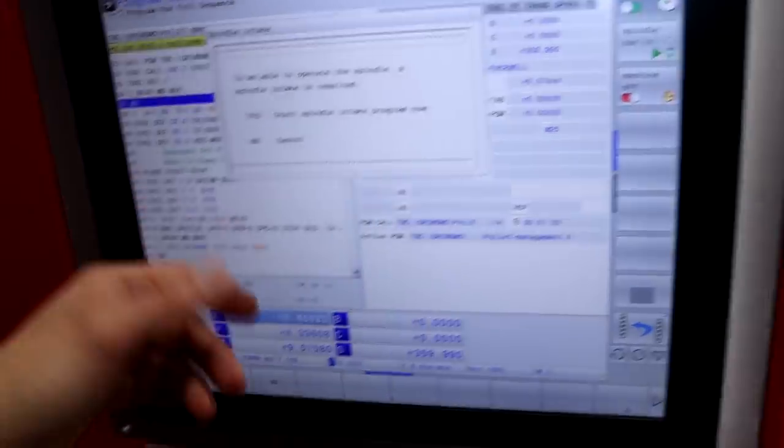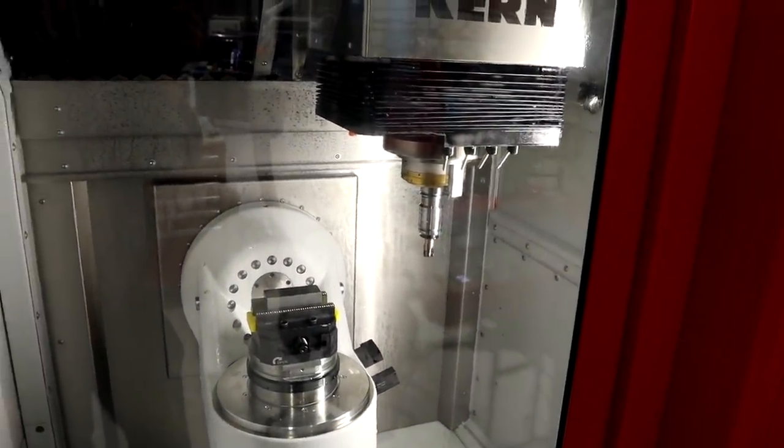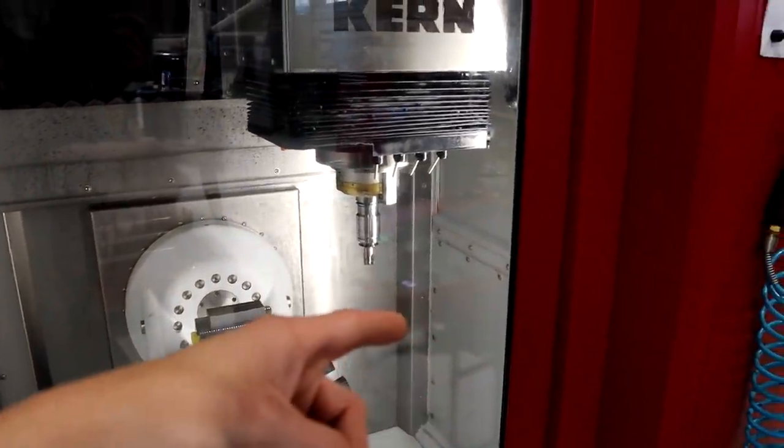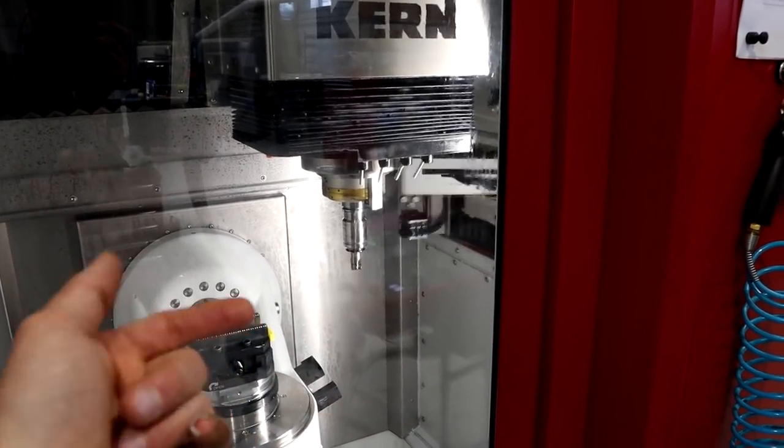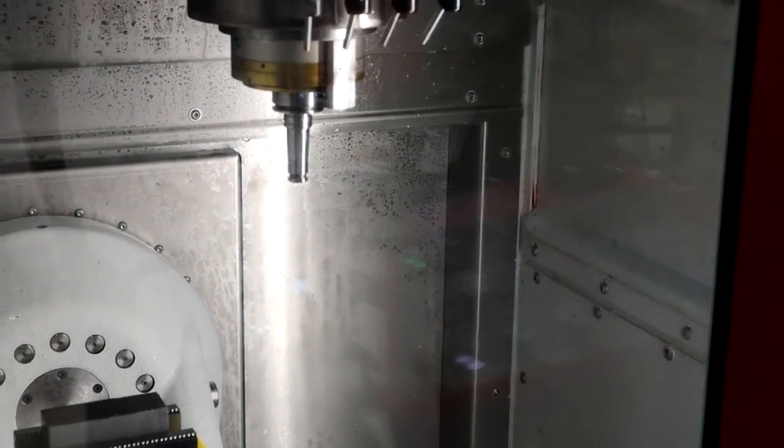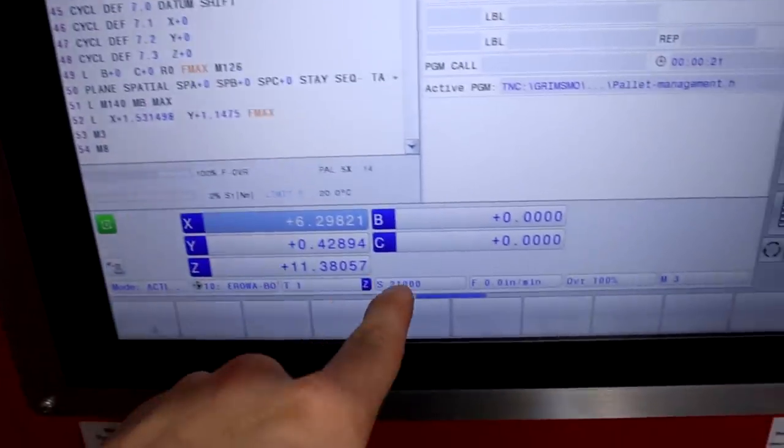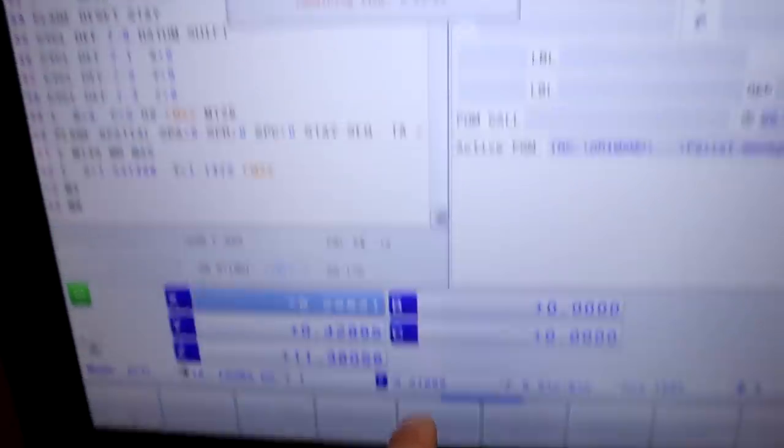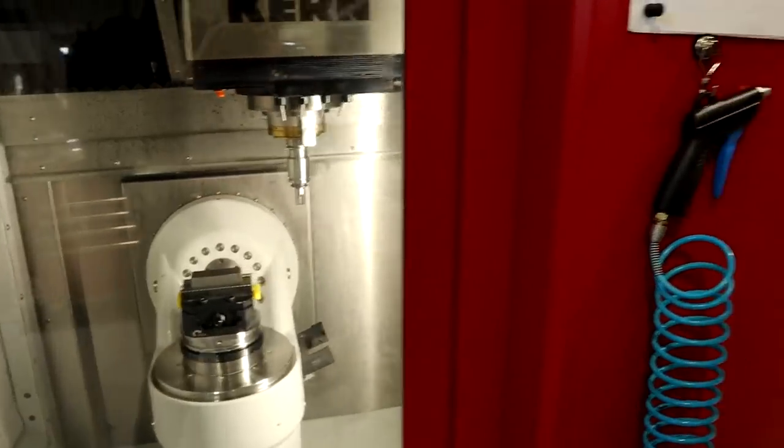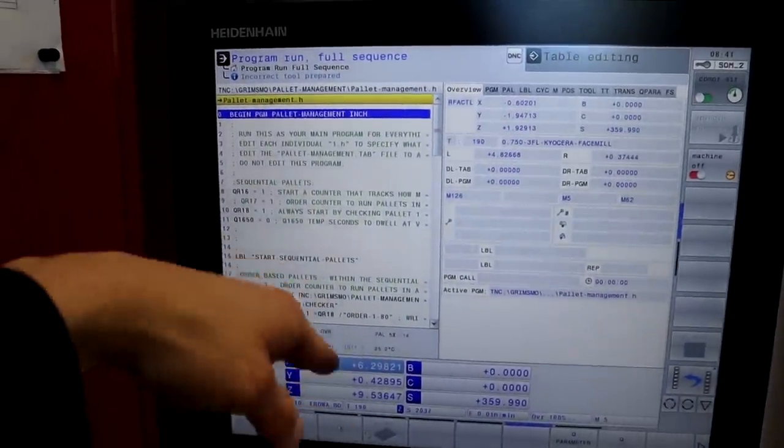Now the cycle will start with a tool change. It's going to call up my one inch indexable face mill. Spindle intake required. It didn't need this like 20 minutes ago, so there's a timer that every six hours I think it requires a spindle warmup before you can continue. The machine's been off because of the alarm last night for the past six hours. So let me do a spindle warmup. Internal stop, just hit yes.